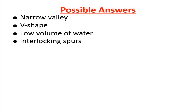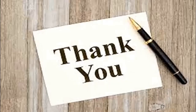Here are the possible answers to the question. If your answer included narrow valley or V-shaped valley, low volume of water, and interlocking spurs, you are indeed correct. This brings us to the end of the lesson today. Feel free to repeat the video if something is not clear. From me, your teacher Victoria Nilefira, goodbye — and this is where our lesson for the day ends. Thank you.